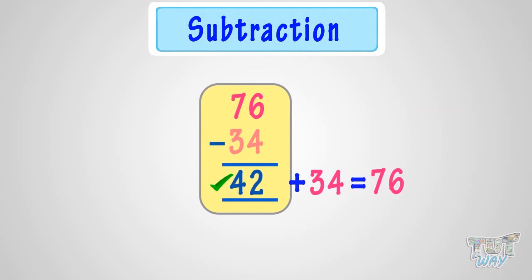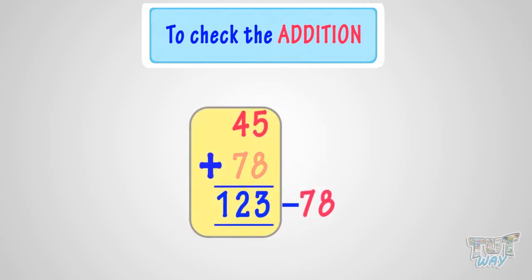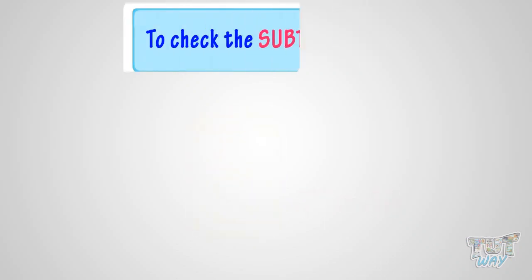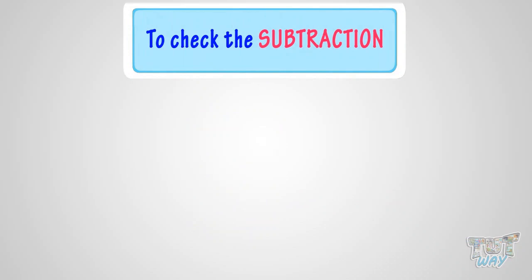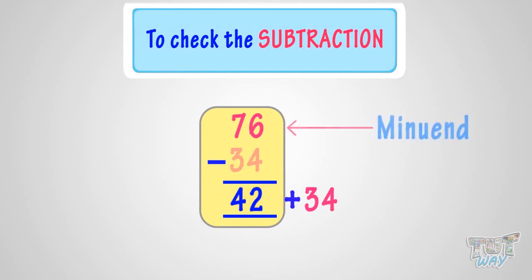So kids, what have we learned? We have learned to check addition problems using subtraction. Subtracting one addend from the sum — if we get the other addend, our sum is correct. And to check a subtraction problem, use addition. Adding the subtrahend to the difference — if we get the minuend, our answer is correct.